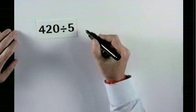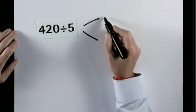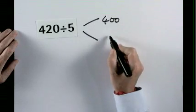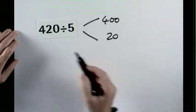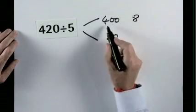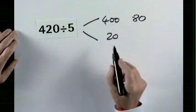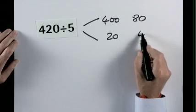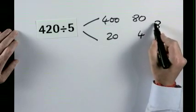420 divide by 5. Split the 420 up into two numbers, 400 and 20. Divide both by 5. 5 goes into 40, 8 times, so into 400, 80 times. 5 goes into 20, 4 times. Combine. 84.